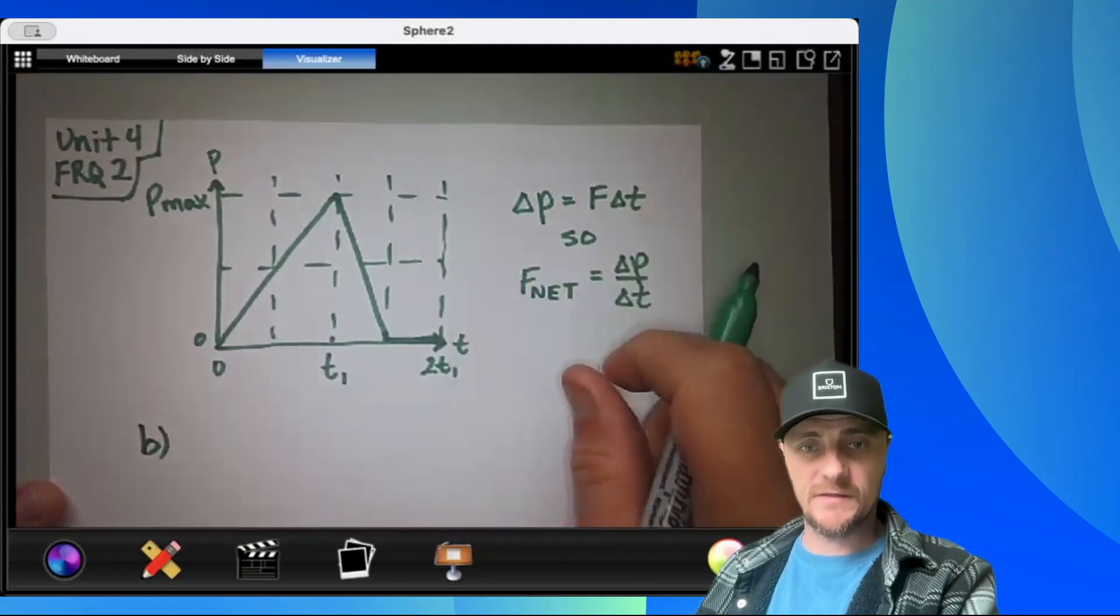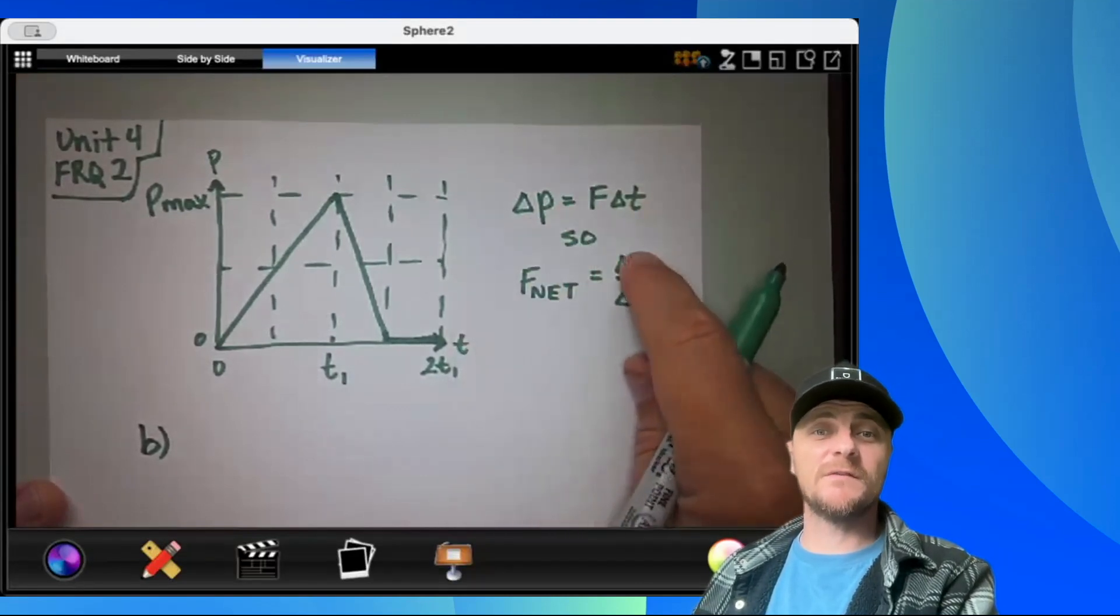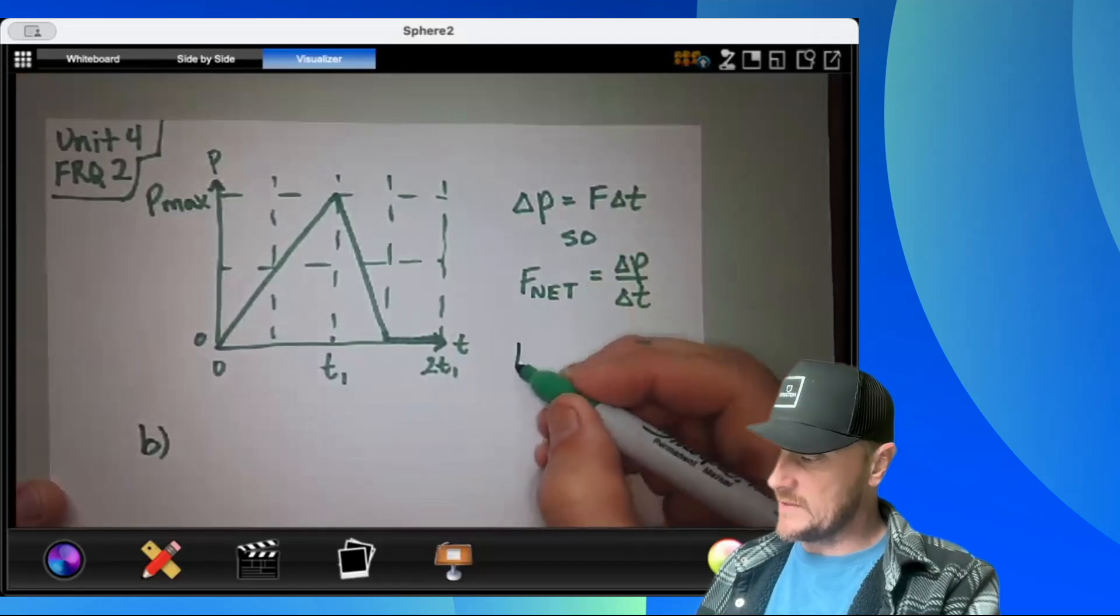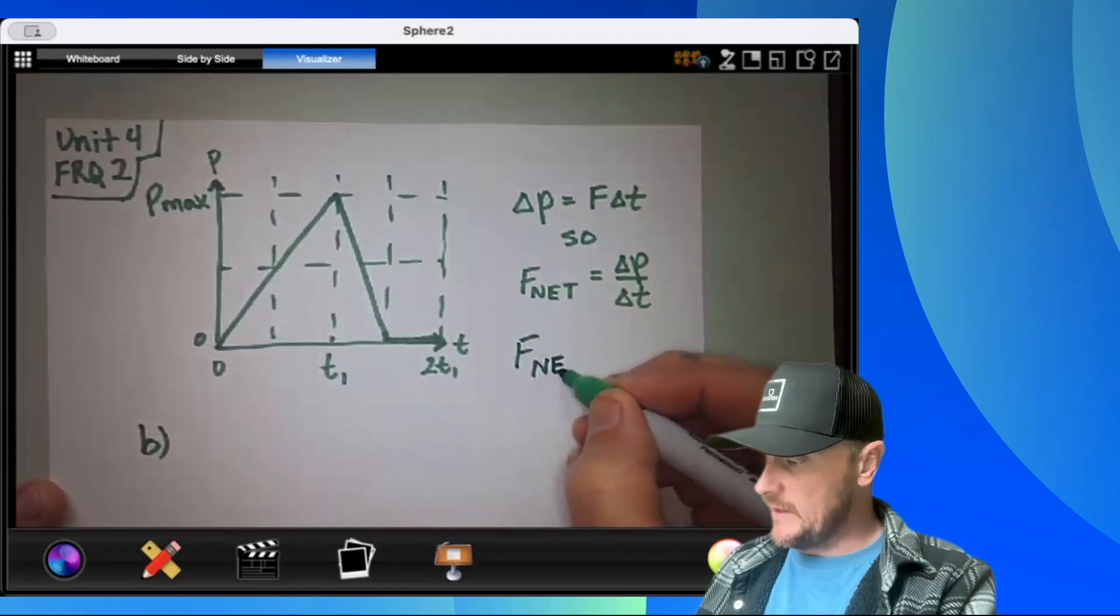Therefore, if I divide both sides by delta t, I have f net equals delta p, the change in momentum over delta t. We also want to say that f net is equal to ma.